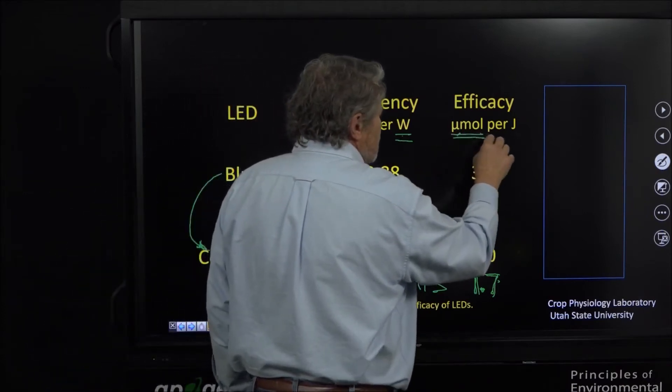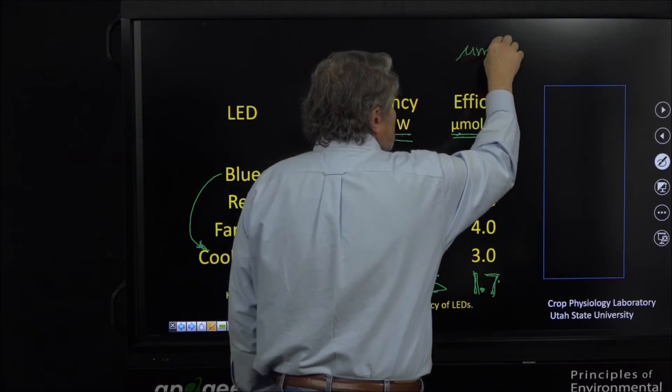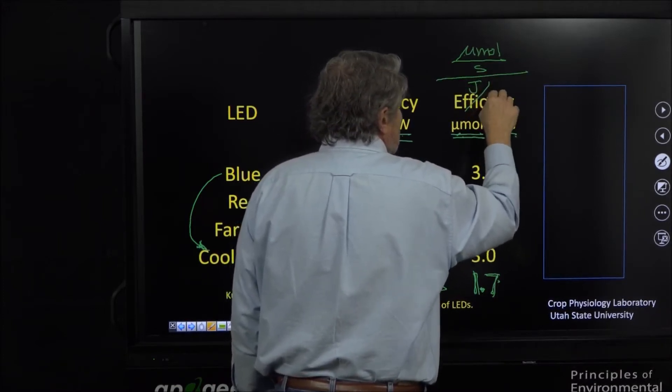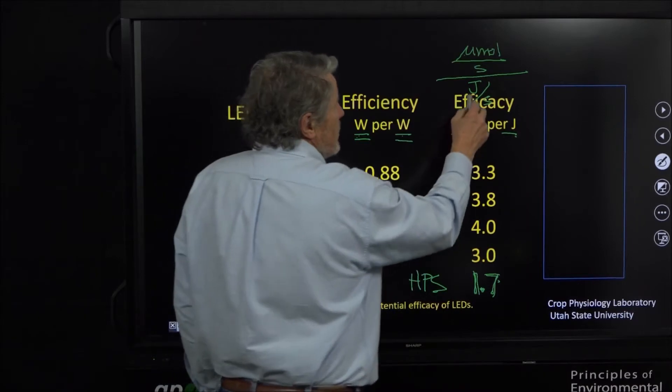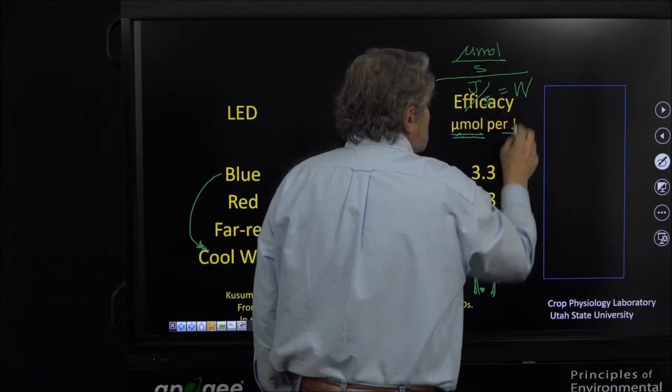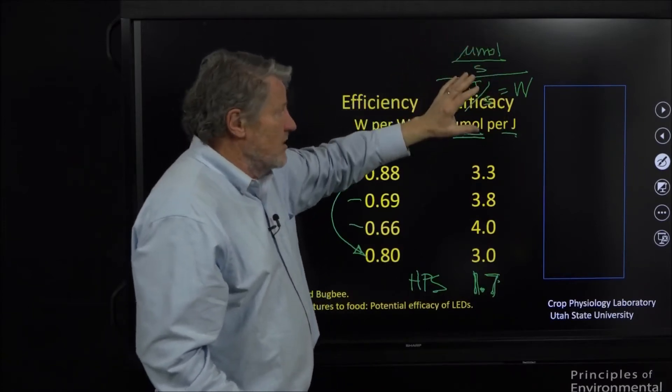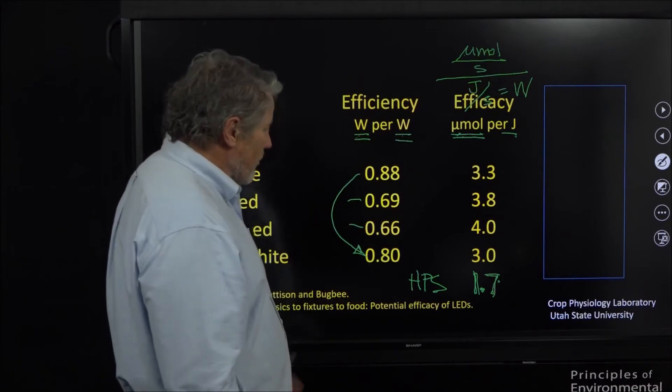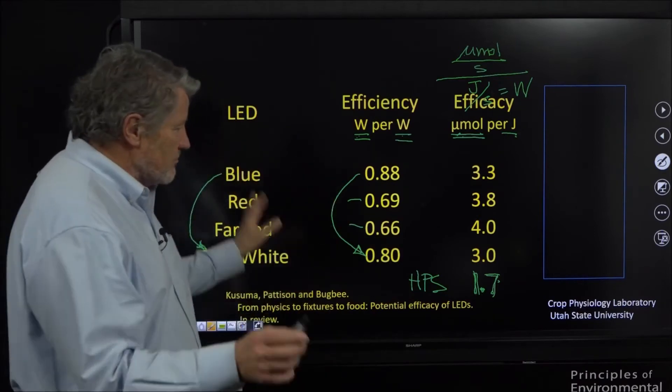Most high pressure sodium comes in at about 1.7 maybe 1.8. LEDs are approaching twice the efficiency - LED chips not the fixtures yet. Let's review this because this is very confusing to people. This is micromoles of photons per second divided by joules of electricity per second and you can see how this simplifies to micromoles per joule. A joule per second is a watt so we can say micromoles per second per watt. That's the same thing. But the key here is that the numerator is moles of photons, the denominator is electric energy or electric power. This is power to power.